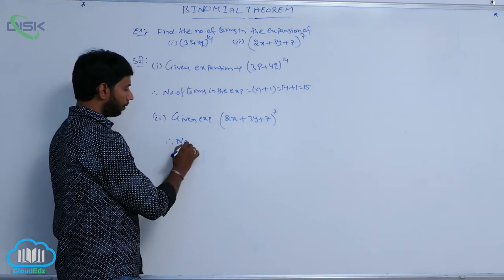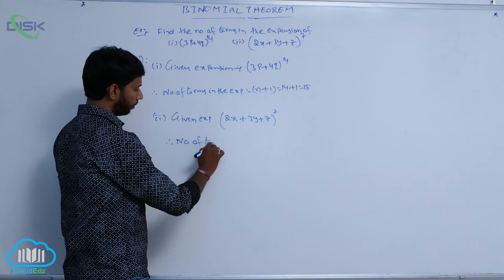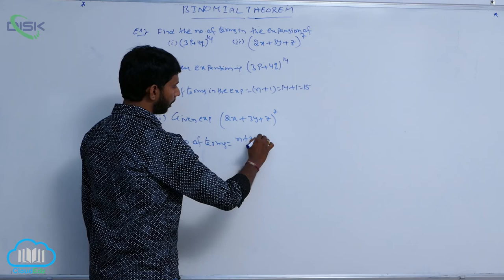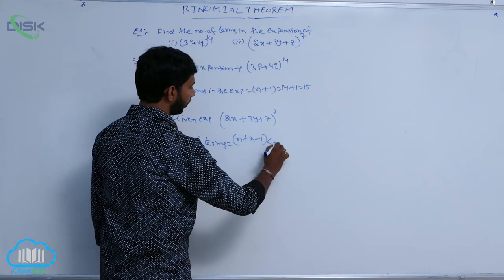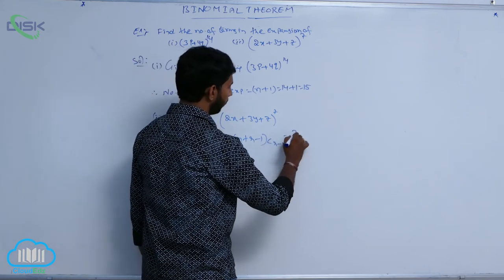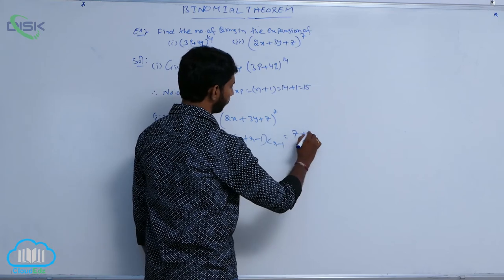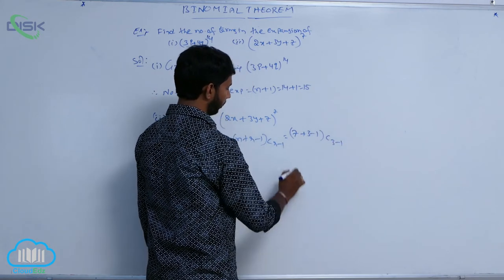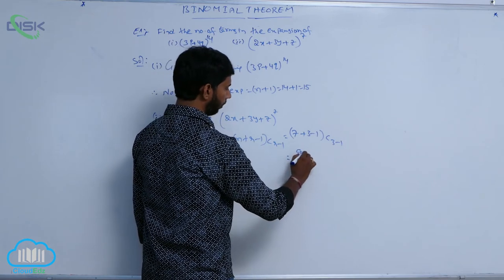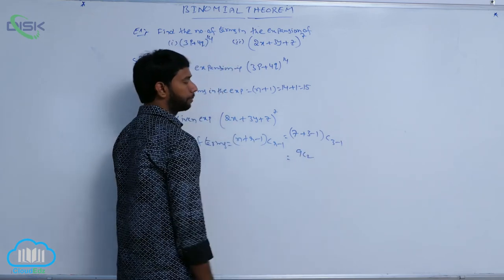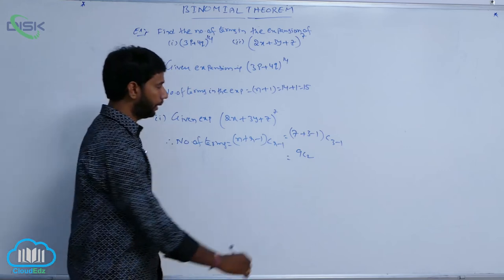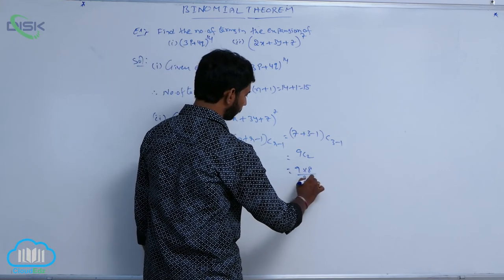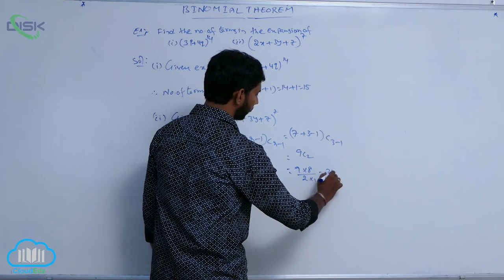Therefore, the number of terms is equal to C(n + r - 1, r - 1). Here, n is equal to 7 and r is equal to 3, so we get C(7 + 3 - 1, 3 - 1) = C(9, 2). And C(9, 2) equals 9 × 8 divided by 2 × 1, which equals 36.